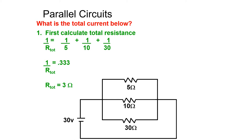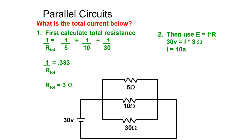We then take the inverse of 0.333 to find the total resistance of 3 ohms. We can then use Ohm's law to find the total current flow in this circuit. If we divide the total voltage of this circuit by the total resistance we will find the total current: 30 volts divided by 3 ohms equals 10 amps.